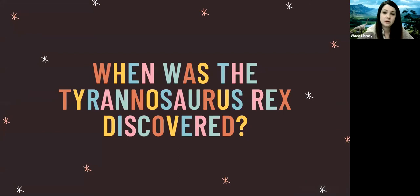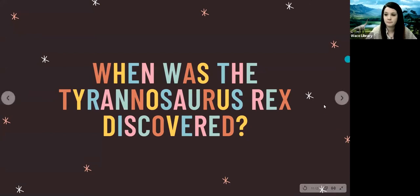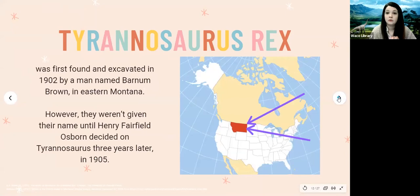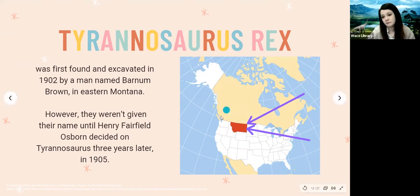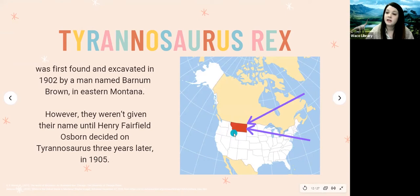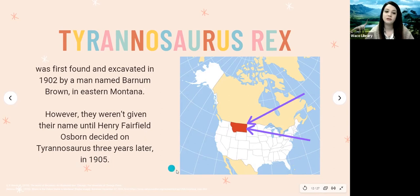When was the Tyrannosaurus rex discovered? The T-Rex was first found and excavated — meaning the fossils were taken out of the ground — in 1902 by a man named Barnum Brown in eastern Montana. On the map, Montana is shown in red with arrows pointing to the eastern side where the fossils were first discovered. They weren't given their name until three years later, when a man named Henry Fairfield Osborne decided to name them Tyrannosaurus.